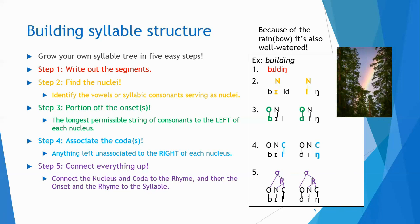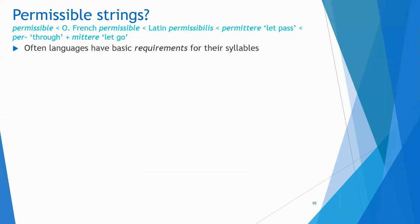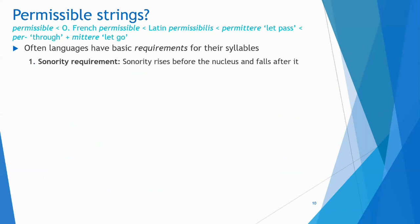That step-by-step process should get you the syllable structure of English if you know English, and any language if you know that language. But you have to know the permissible consonant strings in order to build the onsets — that requires innate knowledge of the language, which is why I only ask you to build syllable structures for English or possibly French in this course. Languages often have basic requirements for their syllables. The permissible strings have to do with something called a sonority requirement — sonority basically meaning 'soundiness,' or how resonant each sound is.